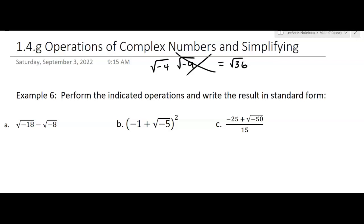So what I have to do is I have to change this to the square root of 4i times the square root of 9i. And then what's going to happen is I'll have the square root of 4 times the square root of 9. That'll be the square root of 36 that I can do. But now I have i times i, which is going to be i squared.